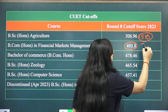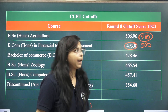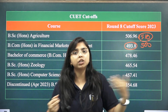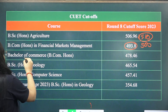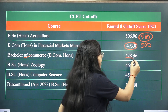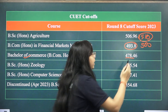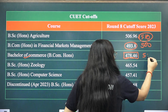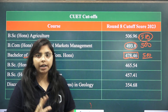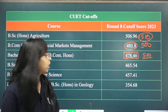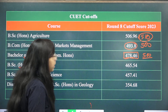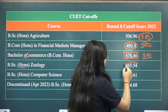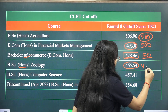Looking at the cutoff scores: to be eligible, you should aim for a score of around 500. The 2023 cutoff was 493, so for 2024 the cutoff will likely increase due to increased competition. For BCom Honours, the cutoff was 478, so you should target a score of 500. If you score a minimum of 500, you will be eligible for BHU. For BCom Honours in another stream, the cutoff was 465, so target 480 or above.